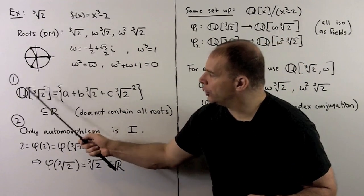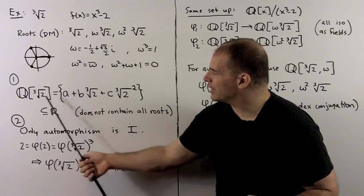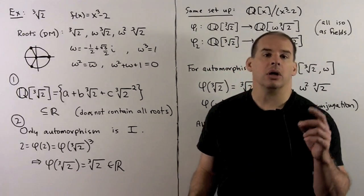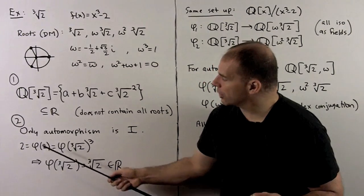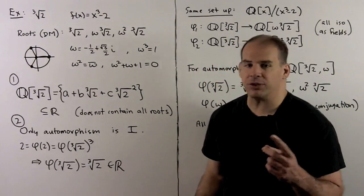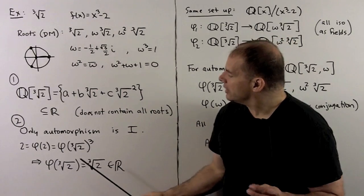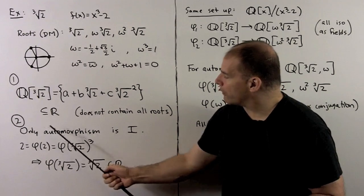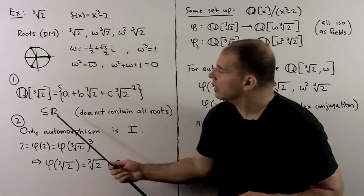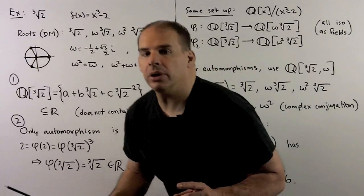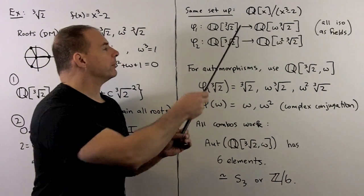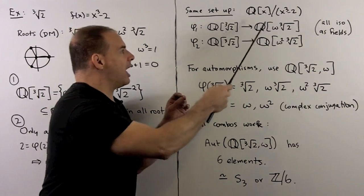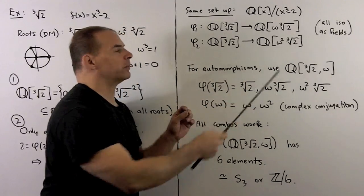Two things to notice. Q(∛2) is a subfield of the real numbers, so it doesn't contain all roots of x³ − 2. If we consider automorphisms of this field using our procedures, the cube root of 2 must go to one of the roots of that polynomial. But since we're in a subfield of the reals, it can only go to ∛2 itself. So the only automorphism is the identity. Using polynomials, we just get isomorphisms between Q adjoined to the various roots — all isomorphic fields.